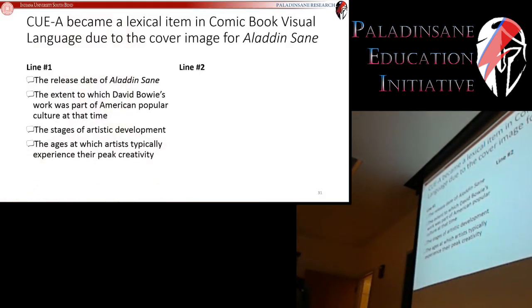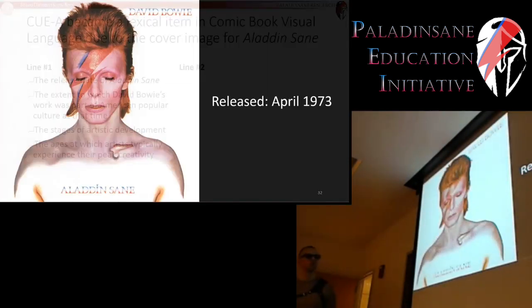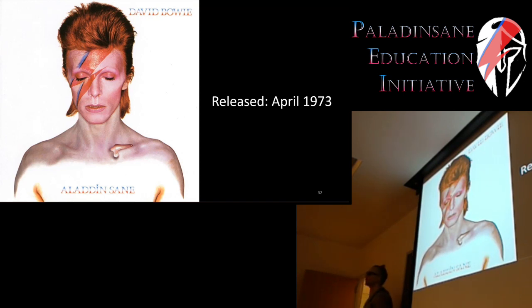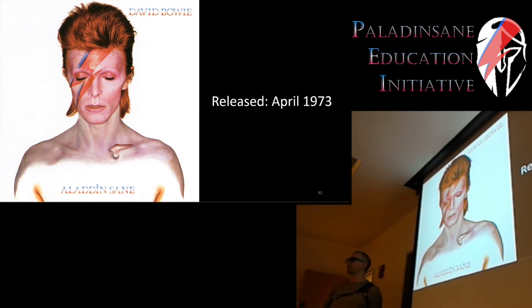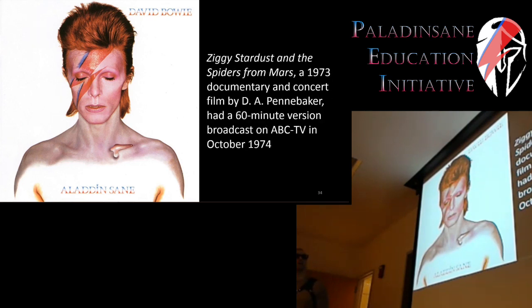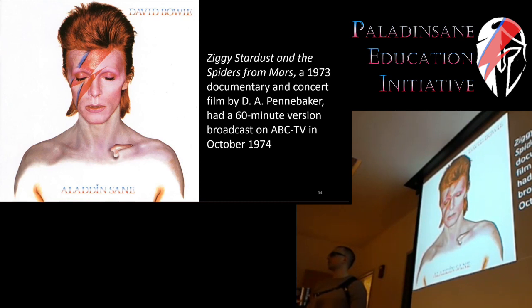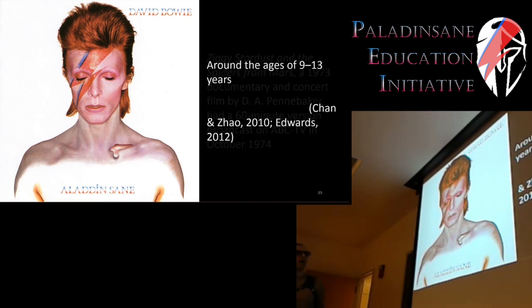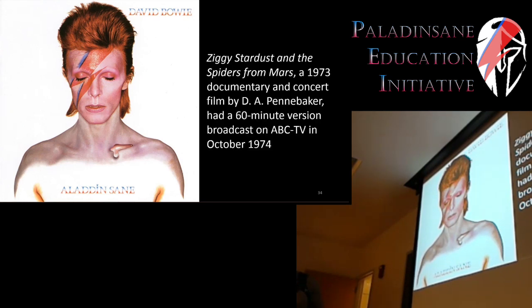The release date for Aladdin Sane was April 1973. Did David Bowie have any influence in popular culture at that time? Yes — this was his sixth studio album and three previous ones peaked in the Billboard Top 40. The Ziggy Stardust and the Spiders from Mars documentary had a 60-minute version broadcast on ABC TV in 1974, when there were only three channels to watch on TV — so a third of America probably watched this.